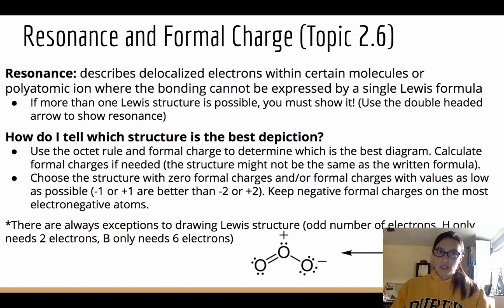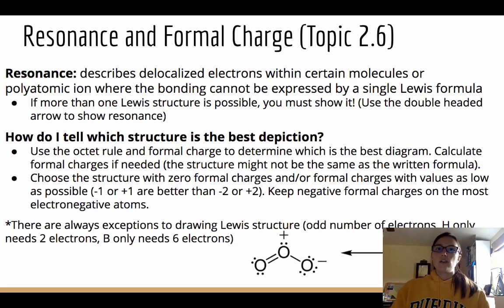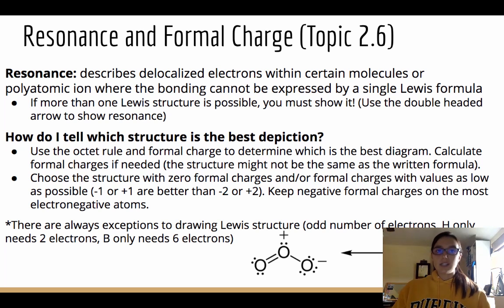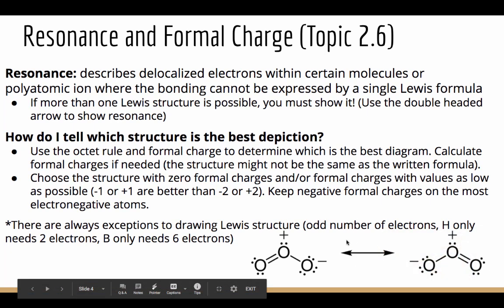Topic 2.6 covers resonance and formal charge, which go along with Lewis structures. Always follow the octet rule and the 6n+2 rule when looking at multiple bonds. Resonance describes delocalized electrons in molecules where you can't represent the molecule or ion as a single Lewis structure. When more than one Lewis structure is possible, you must show all of them using a double-headed arrow. AP does not want you to draw a dotted line — use the double-headed arrow.